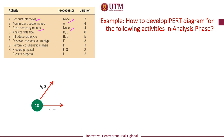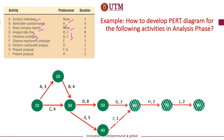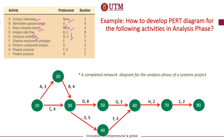Nodes 20 and 30 are drawn at the end of these respective arrows. The next step is to look for any activity requiring only A as predecessor — activity B is the only one. So it is represented by an arrow drawn from node 20 to 30, labeled B,4. Because activities D (analyze data flow) and E (introduce prototype) require both B and C to be finished, arrows labeled D and E are drawn from node 30. Nodes 40 and 50 are events that recognize the completion of both B and C. This process is continued until the entire PERT diagram is completed, with the entire project ending at event node 80.